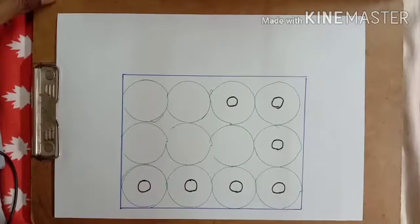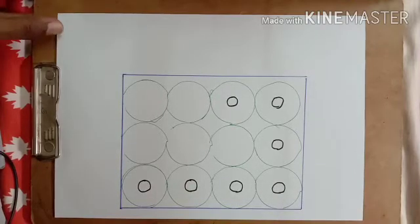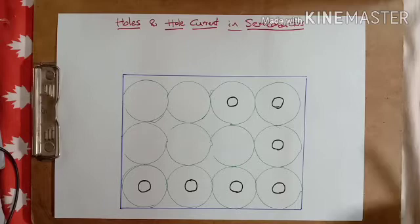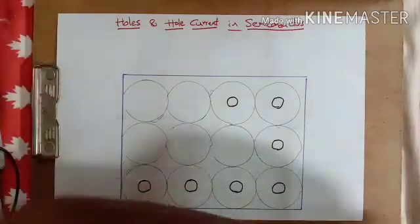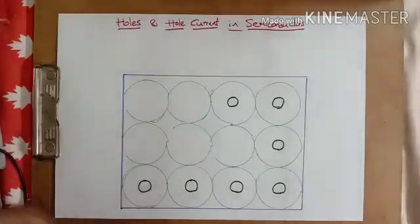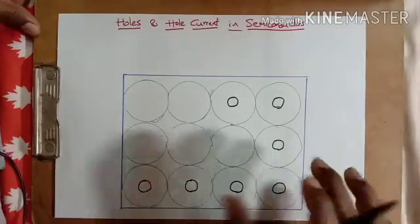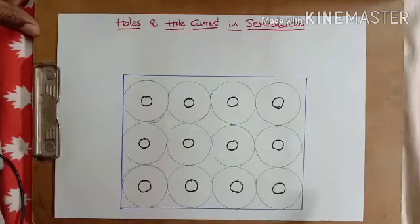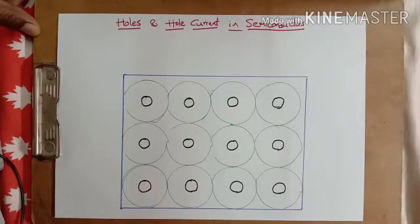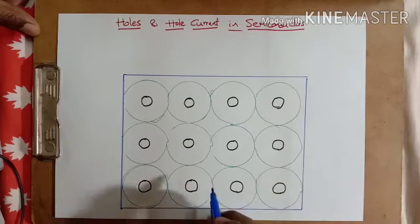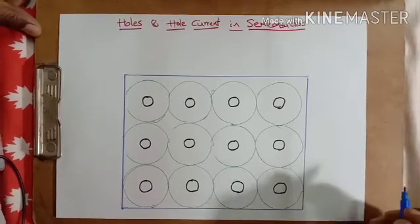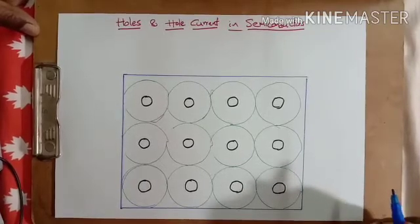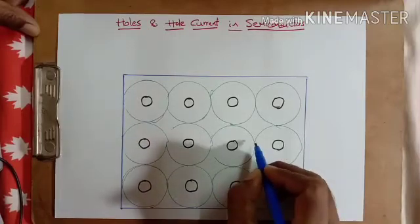In this video I'll explain the concept of holes in semiconductors and hole current. I'm drawing a slab of semiconductor with magnified atoms. As you know, each silicon atom has four valence electrons, and all four valence electrons are bonded with its neighboring four atoms via covalent bonds.